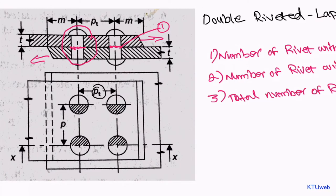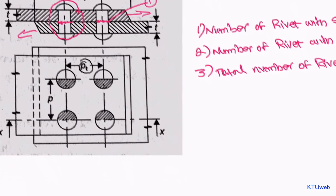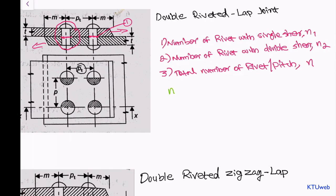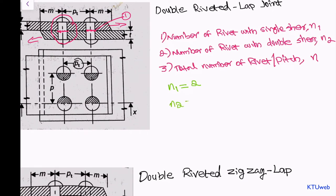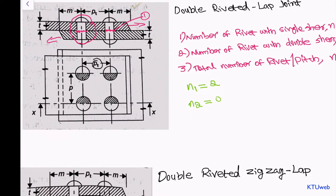In any lap joint there will be no rivet with double shear. You will get a clear idea of what double shear is when we discuss butt joints. In this case, n1 is equal to 2 — that is the rivets with single shear — and n2 is equal to 0, meaning there is no rivet with double shear.